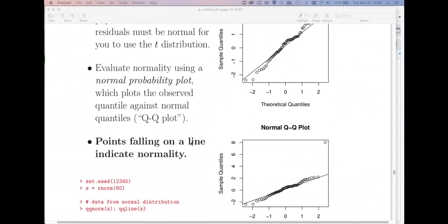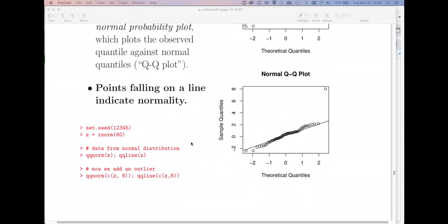Just to get some comfort with this, I went off and I generated 60 points from a normal distribution. We're going to use the rnorm function. This would be a standard normal distribution. I've set my seed if you want to replicate what I've done. To generate a normal probability plot, a normal quantile-quantile plot, we use qqnorm and then qqline superimposes a line for comparison.